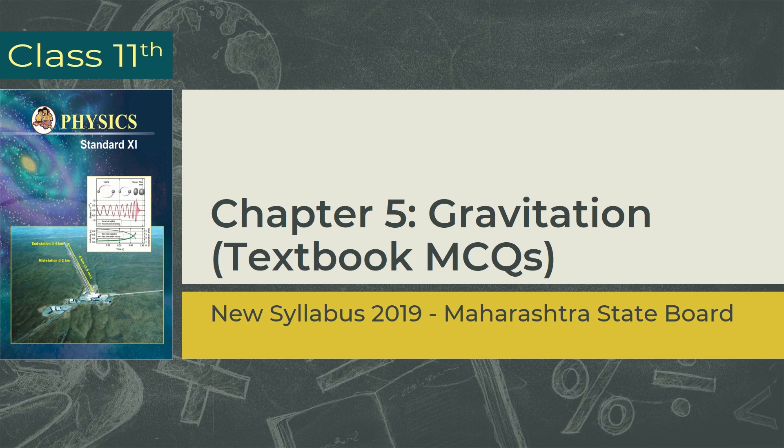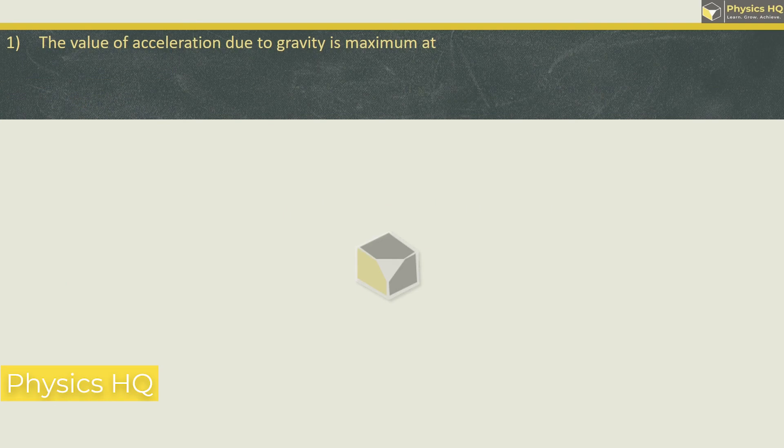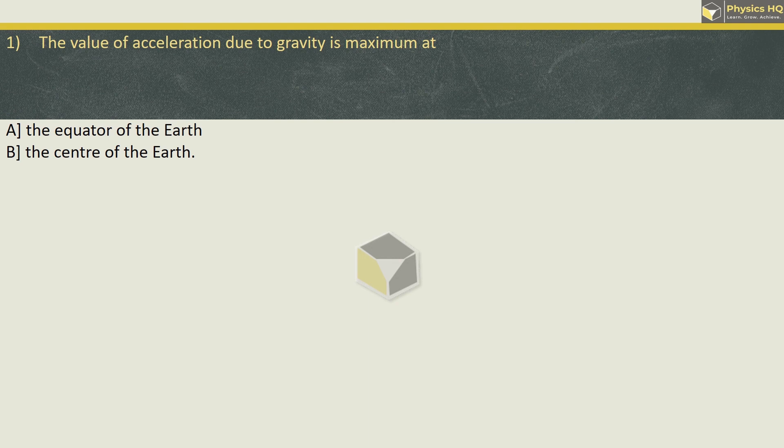So let us start with the first MCQ. The value of acceleration due to gravity is maximum at the equator of the Earth, center, poles or slightly above the surface of the Earth.